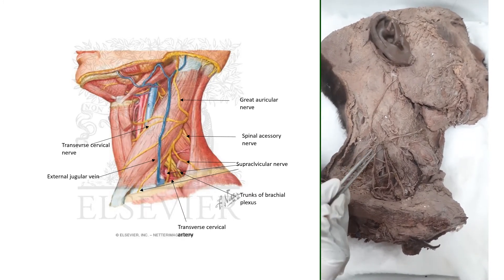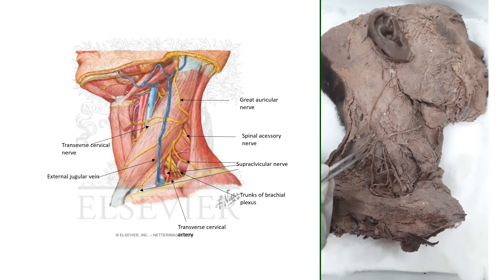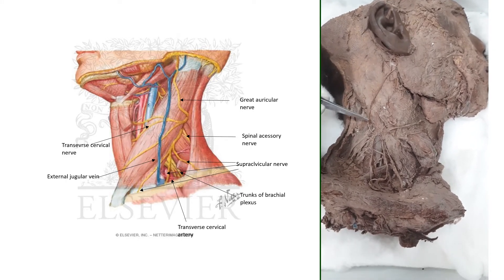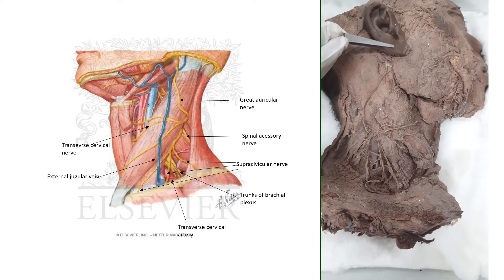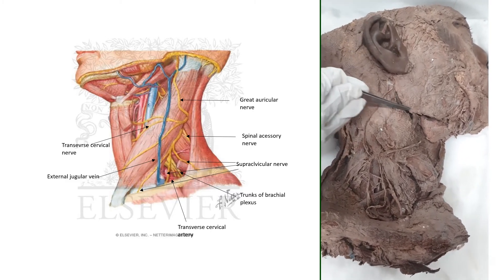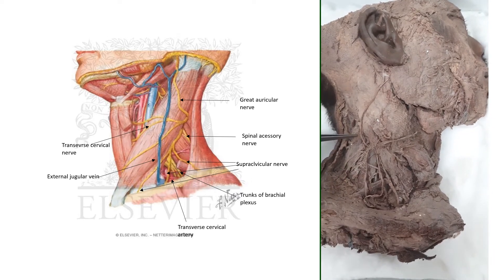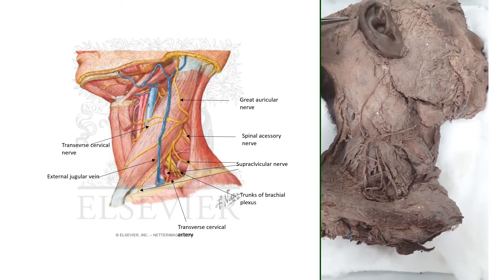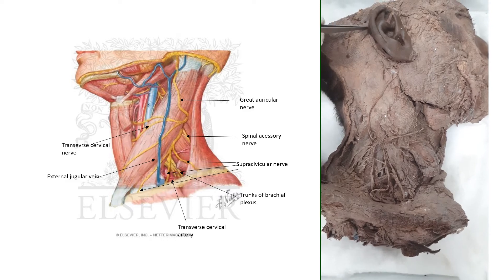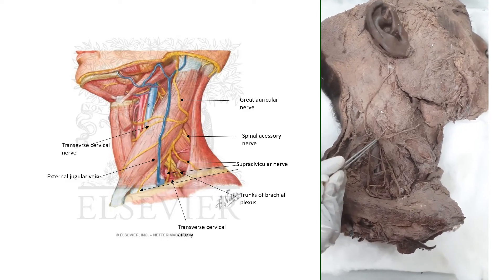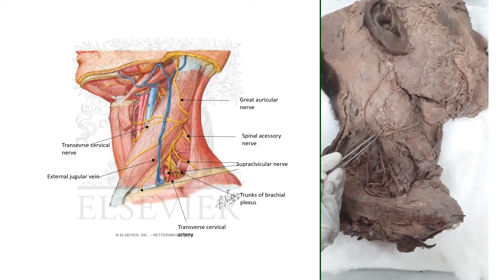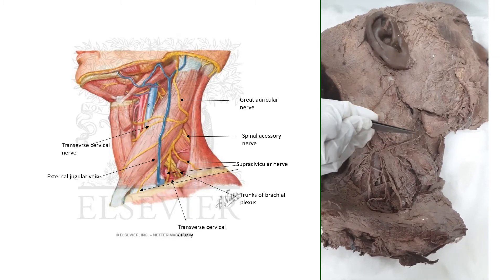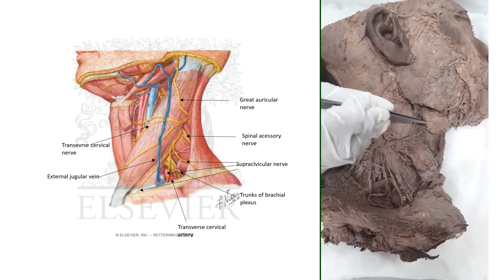The cutaneous nerves present in the posterior triangle include the great auricular nerve, which supplies the auricle and the angle of the mandible; the lesser occipital nerve, which supplies the cranial part of the pinna; and the transverse cervical nerve, which runs across the sternocleidomastoid muscle and supplies the front of the neck.